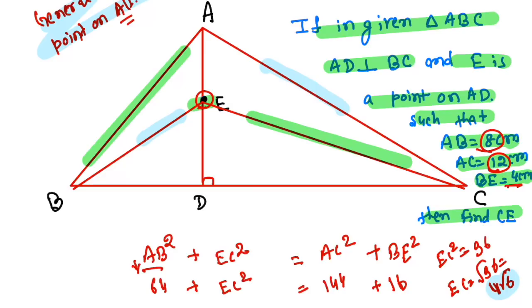So I am again repeating. What is the general point on altitude concept? If you have an altitude and you have any point on altitude, say the point is E, then the AC² plus BE² is nothing but AB² plus EC².